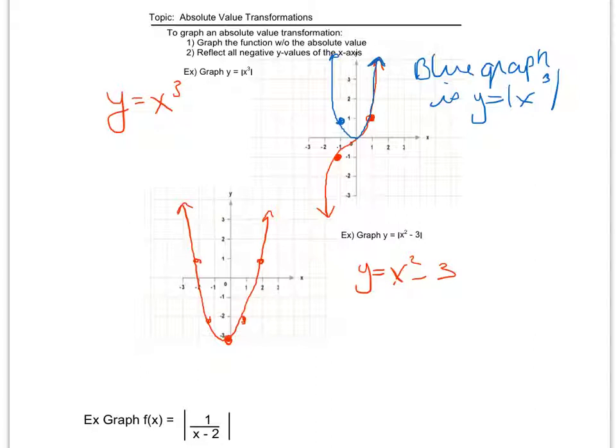And what I'm going to do now to figure out what the actual given function was with the absolute value bars is I'm going to take all of this down here that's underneath, or all of these values down here that are negative y values, and I'm going to reflect them up over the x-axis. So when this vertex reflects up, it's going to be here. When this point here reflects up, it'll be here. This point will be here.